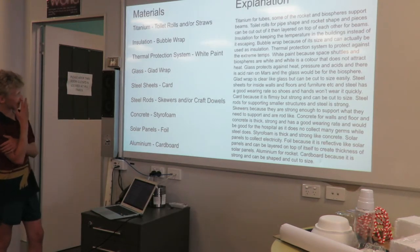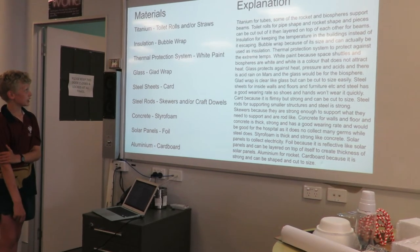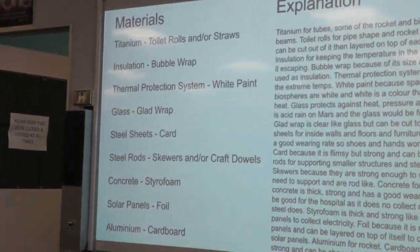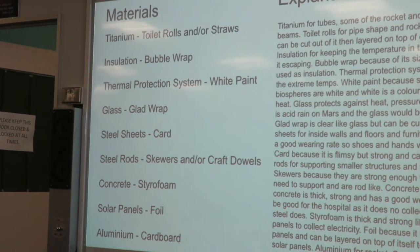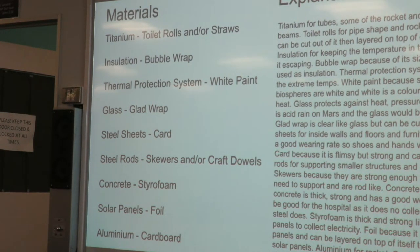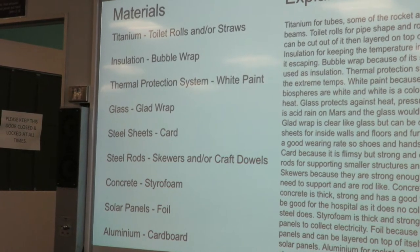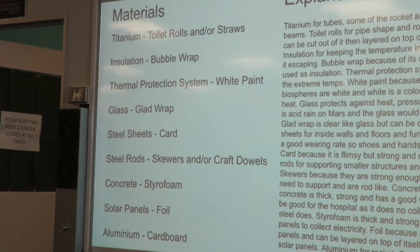The materials I need to use in my colony were titanium, insulation, thermal protection system, glass, steel sheets, steel rods, concrete, solar panels, and aluminium. My substitutes for those in my model were toilet rolls and straws, bubble wrap, white paint, glad wrap card, skewers and/or craft dowels, styrofoam, foil, and carpet.